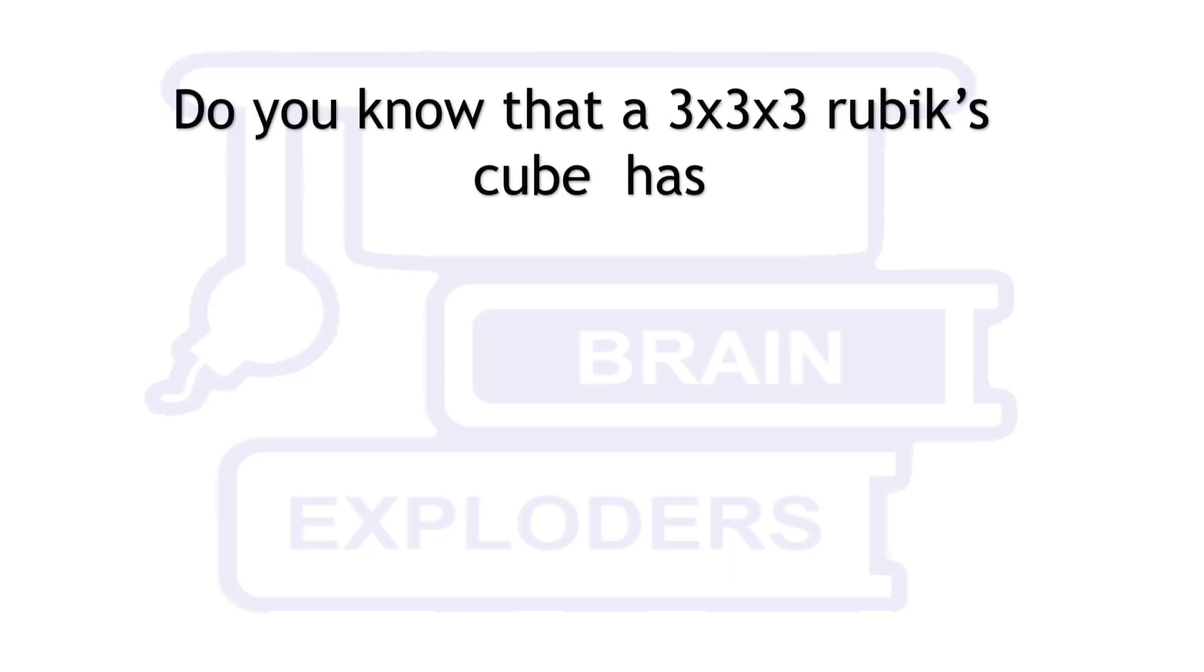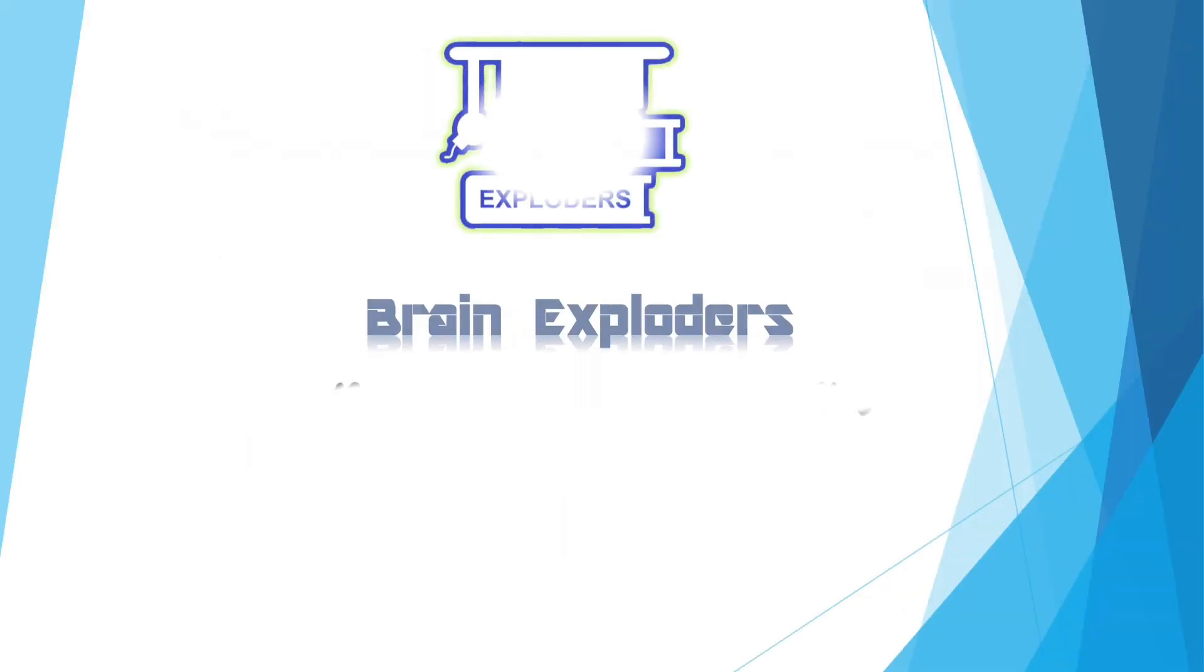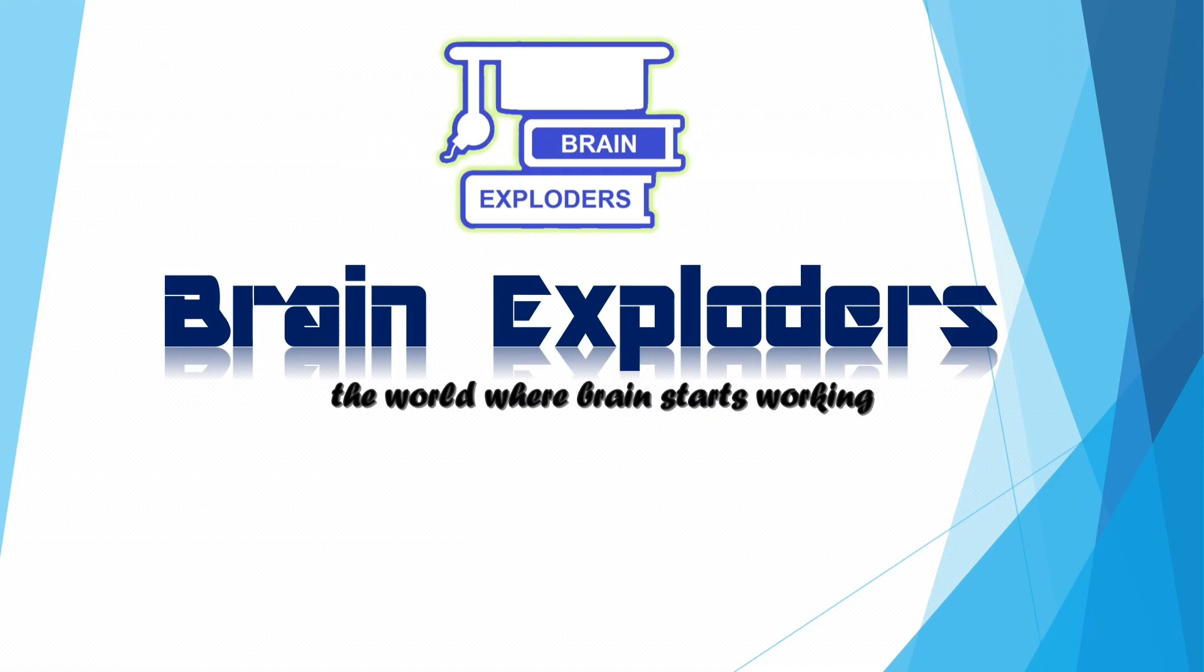Do you know that a 3x3x3 Rubik's cube has more than 856,000, more than 489 million, more than 274 billion, more than 3 trillion? Actually it has 43 quintillion, 252 quadrillion, 3 trillion, 274 billion, 489 million, 856 thousand combinations. You are watching Brain Exploders, the world where brain starts working.